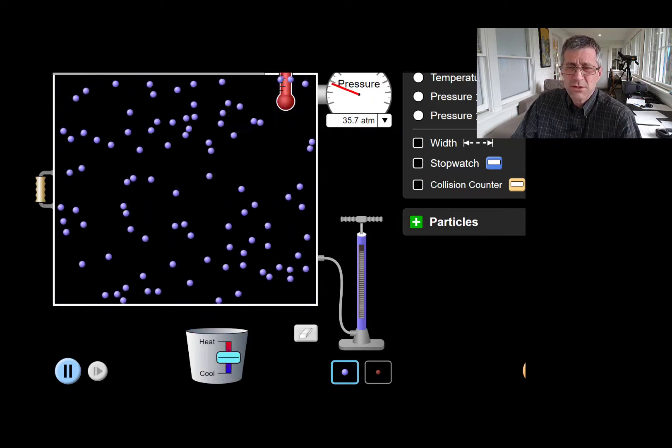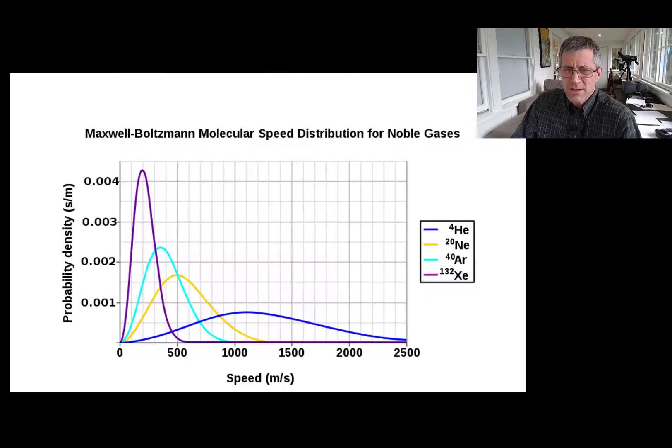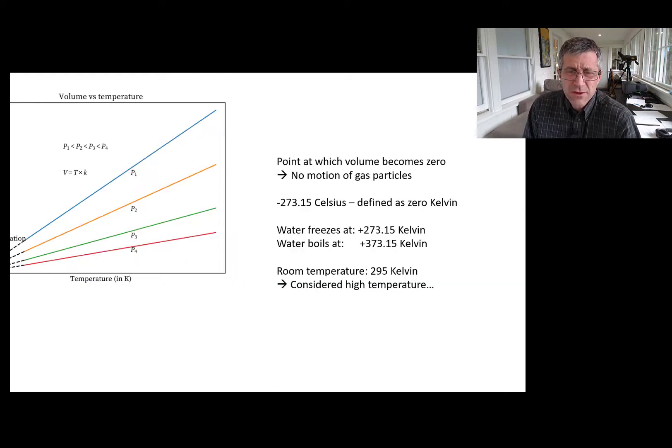And what they found when they did that was that you get these different lines. So for these different gases, one, two, three, and four, that you get, as you measure the volume change as the temperature changes, that you can extrapolate and they all appear to meet up at some point.